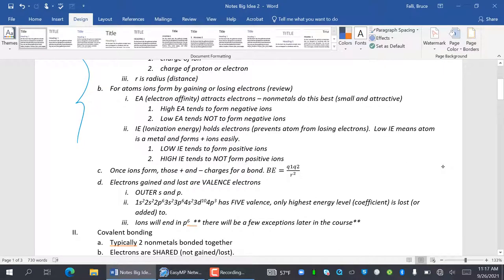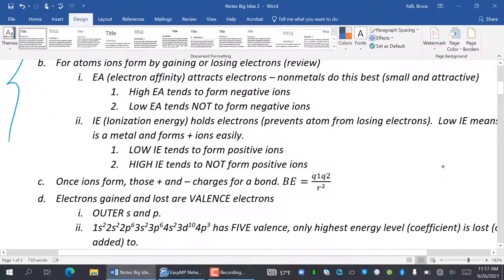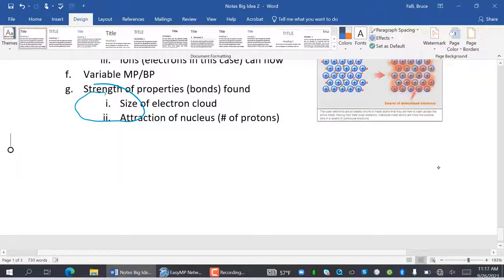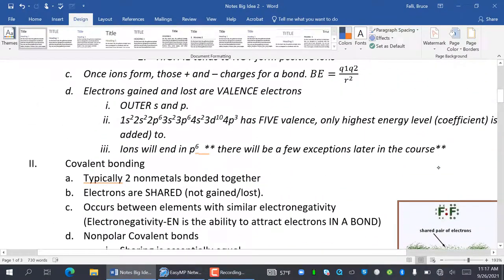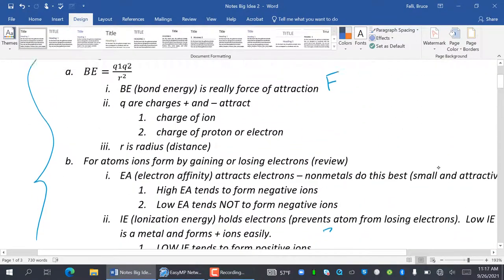For atoms, ions form by gaining or losing electrons. Electron affinity is basically gaining electrons and then the trans-periectable. Ionization energy is losing electrons. Basically it trends the periodic table. And remember, I don't think I made this abundantly clear to you guys.